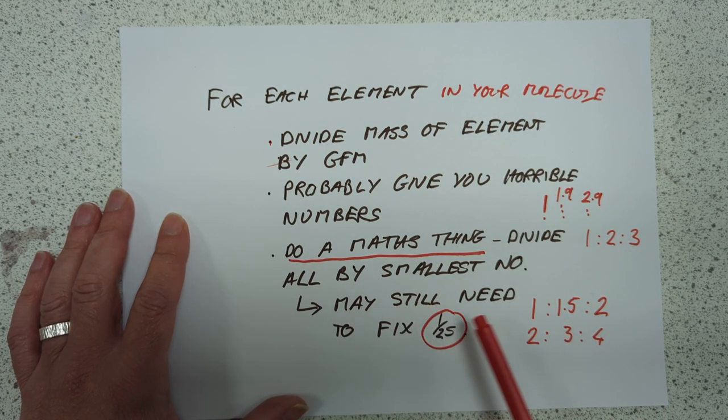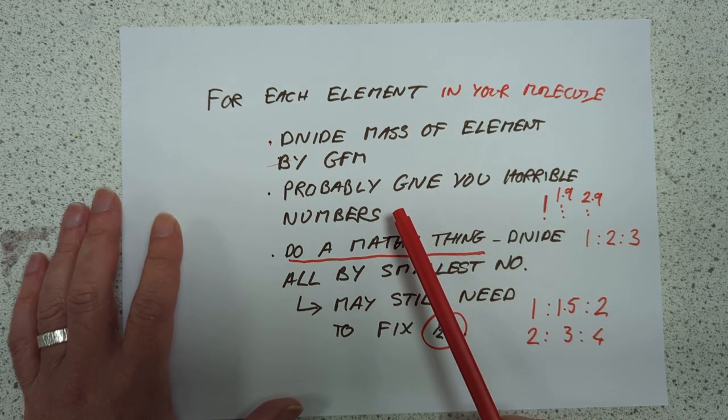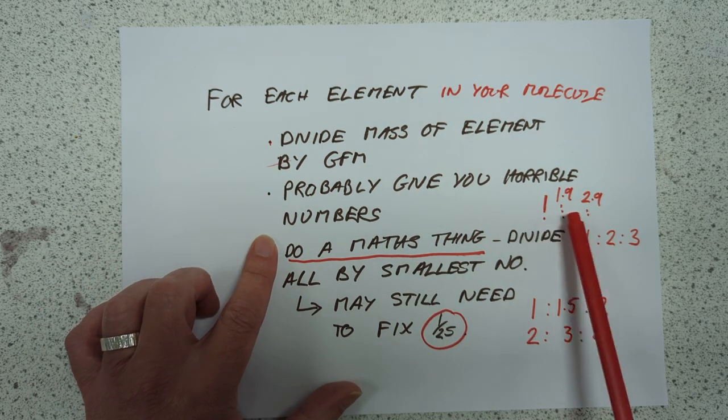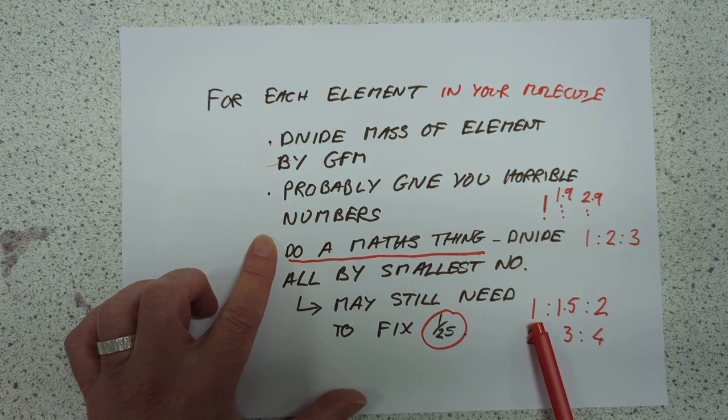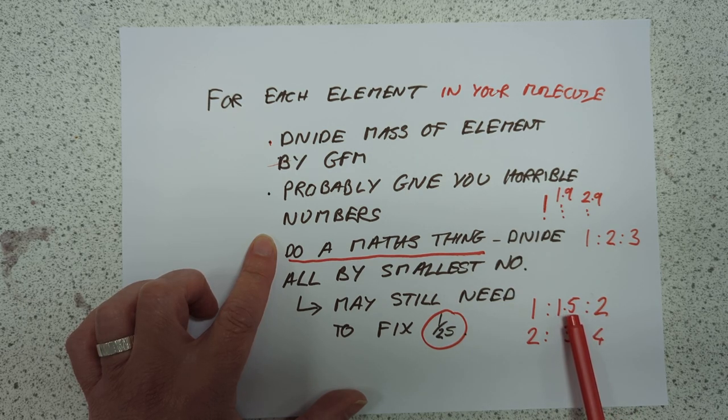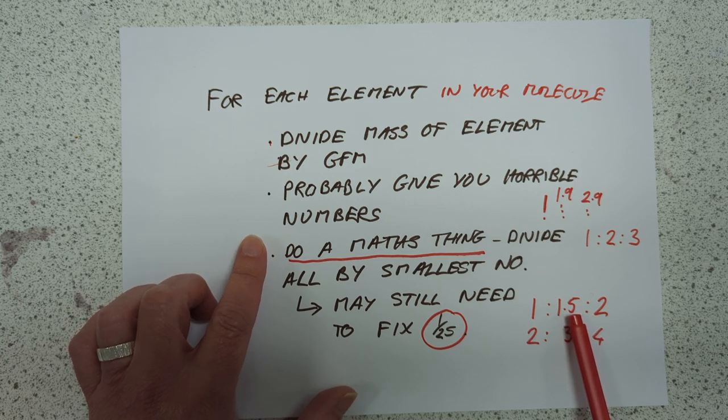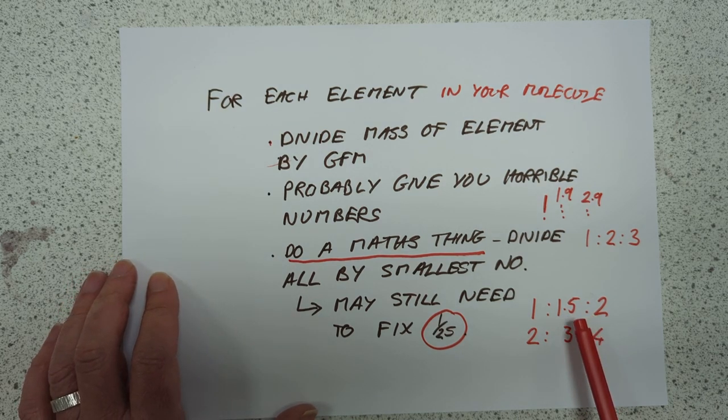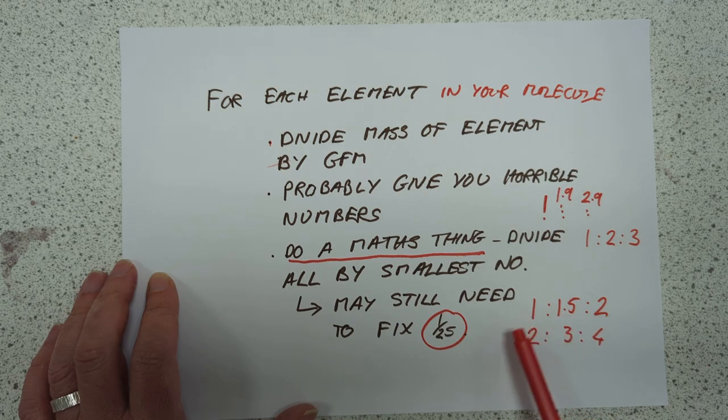However, you may find that once you've done your calculation, even after you've divided it all by the smallest number, you might end up with this set of numbers, 1 to 1.5 to 2. You can't round from that, obviously, and you also can't have half a mole. So, or you can't have half an atom, rather. So what do we do with this particular problem? We simply multiply up to get 2 to 3 to 4.